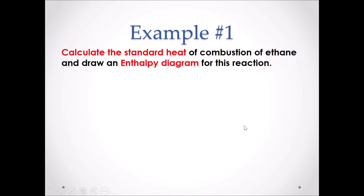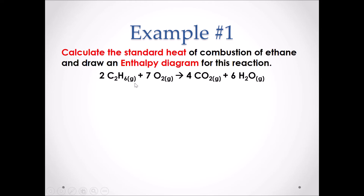Example 1: Calculate the standard heat of combustion of ethane and draw an enthalpy diagram for this reaction. First, we need a balanced chemical equation. We have a coefficient of 2 in front of ethane, a coefficient of 7 in front of O₂, a coefficient of 4 in front of CO₂, and a coefficient of 6 in front of H₂O gas.